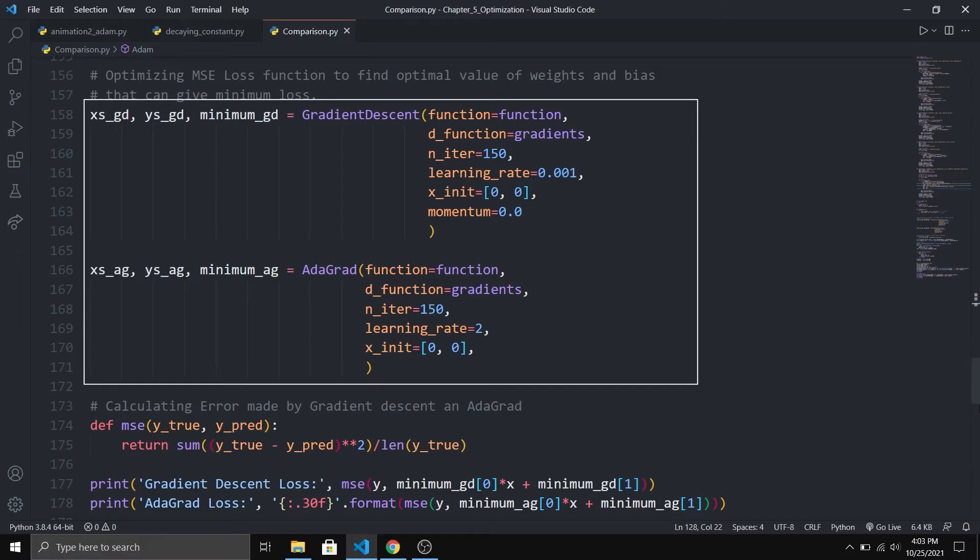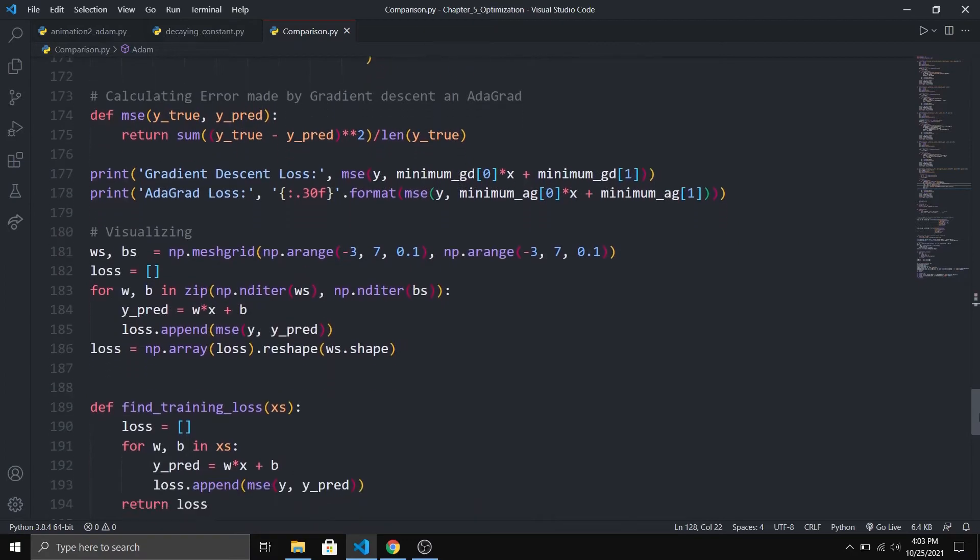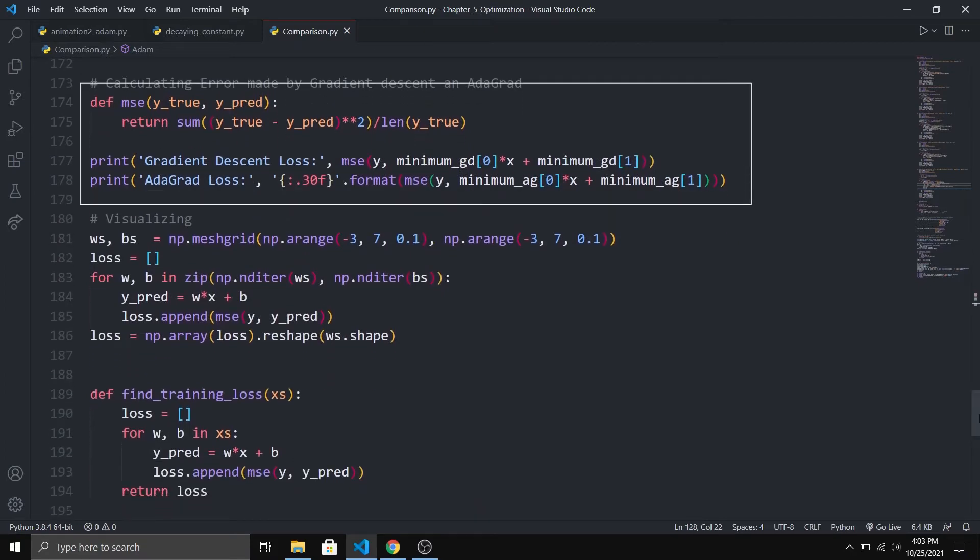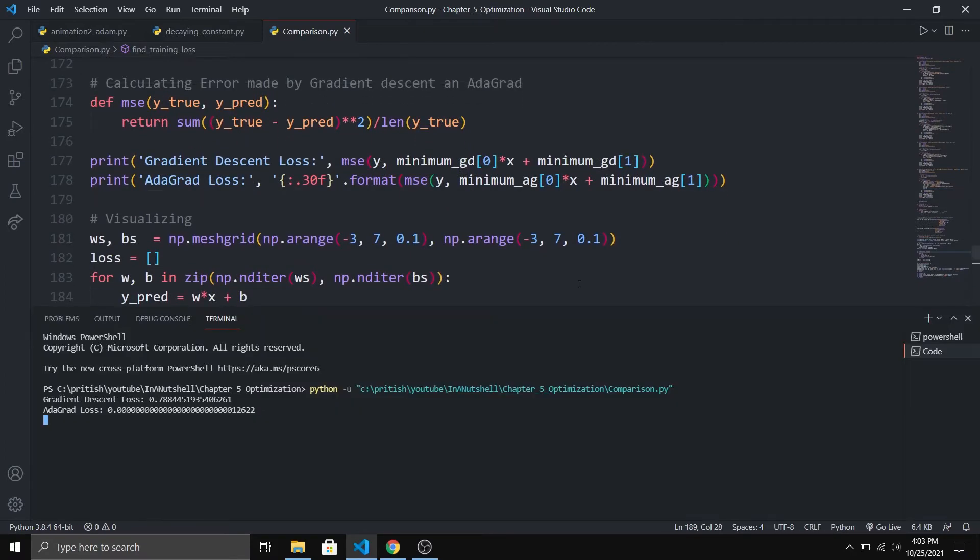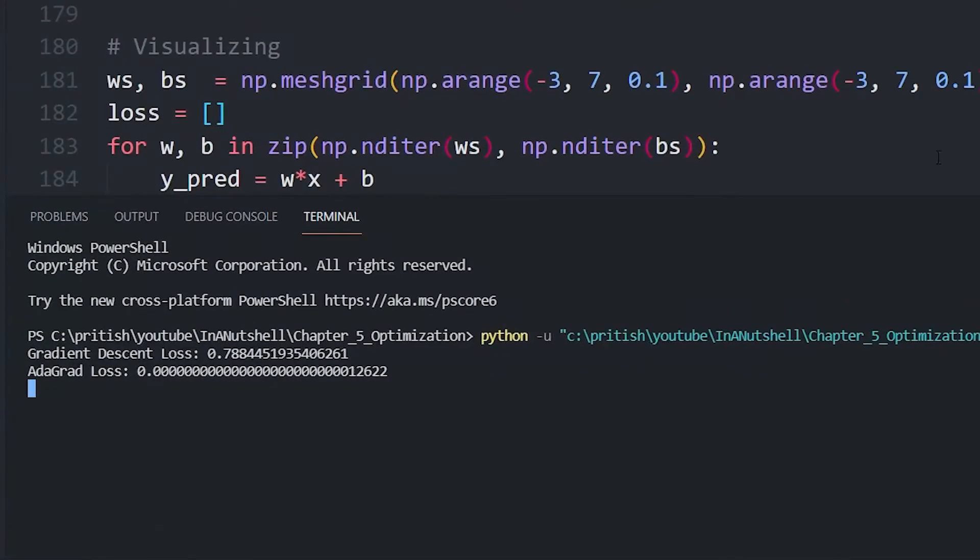Then we will give function and gradients to gradient descent and AdaGrad so they can find optimal values of weights and biases. I have created both optimizers from scratch with Python. If you want to learn more, you can find this on my GitHub—links are in the description. After training, I am printing the loss of both optimizers and some matplotlib magic to show us good-looking graphs.